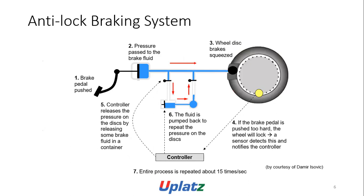Anti-lock braking system: brake pedal is pushed, pressure is passed to the brake fluid, wheel disc brake is squeezed. If the brake pedal is pushed hard, the wheel will lock. A sensor detects this and activates the controller. The controller releases the pressure by releasing some brake fluid into a linear container. The fluid is pumped back, which repeats the pressure. The entire process is repeated about 15 times per second.